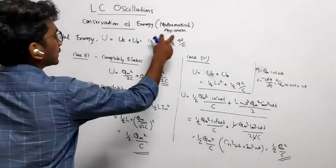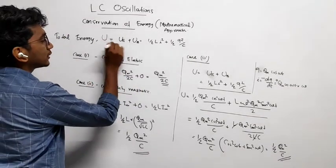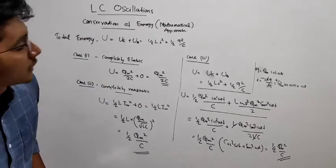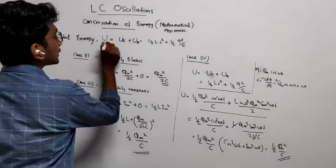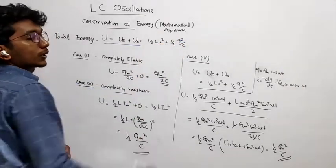First you have to understand what is the total energy. U is equal to Ue plus Ub. That is the total energy. And I will say that in a general case, half LI squared plus half into Q squared by C.